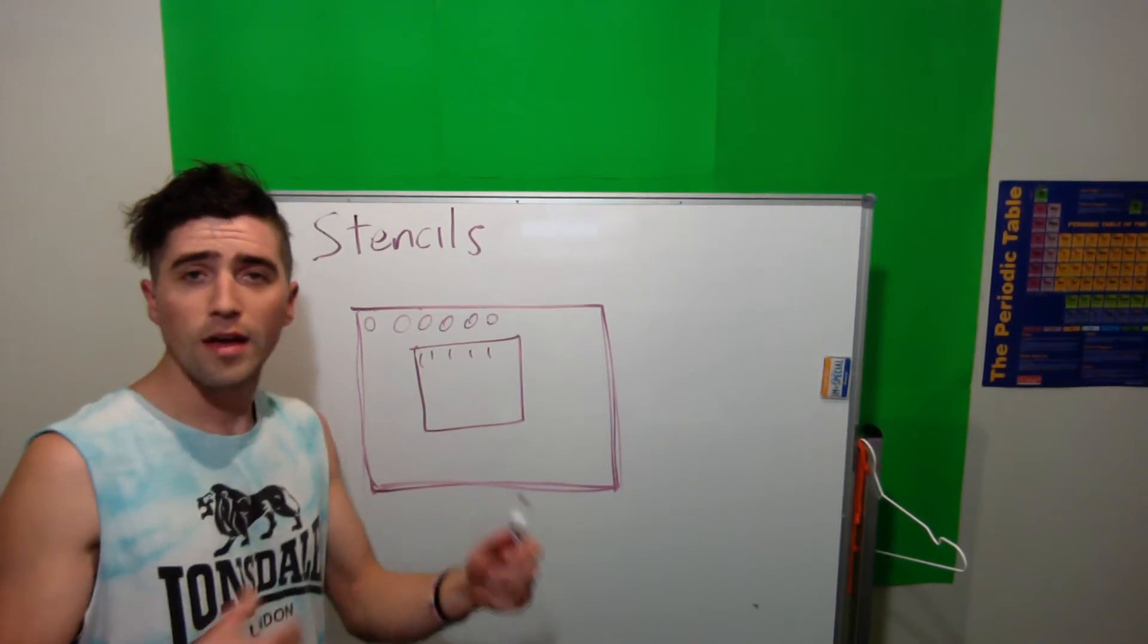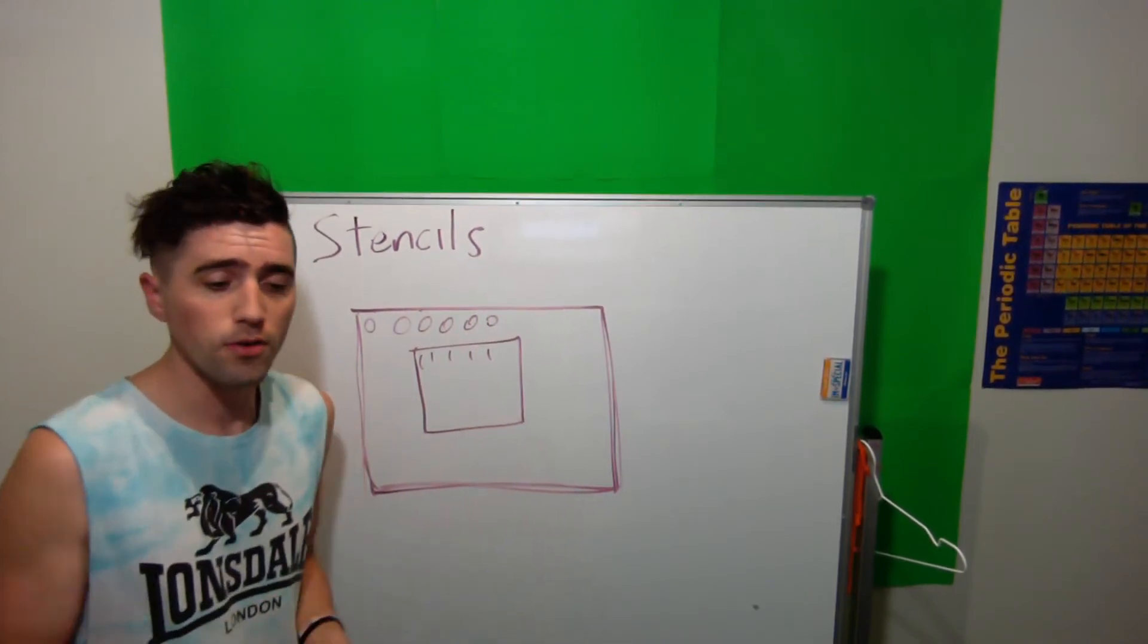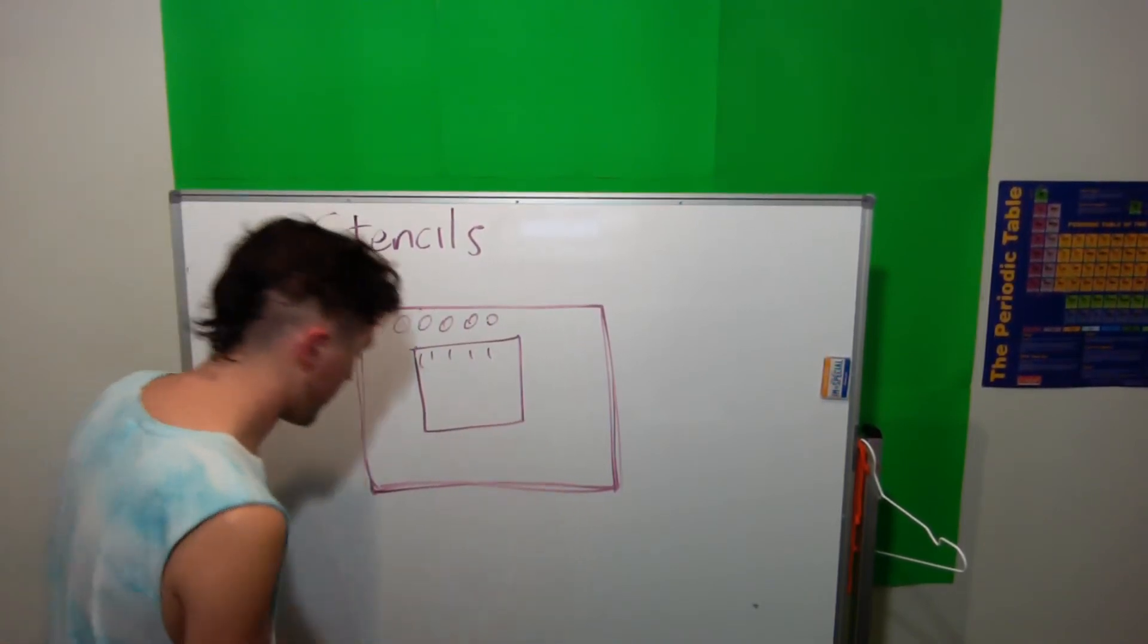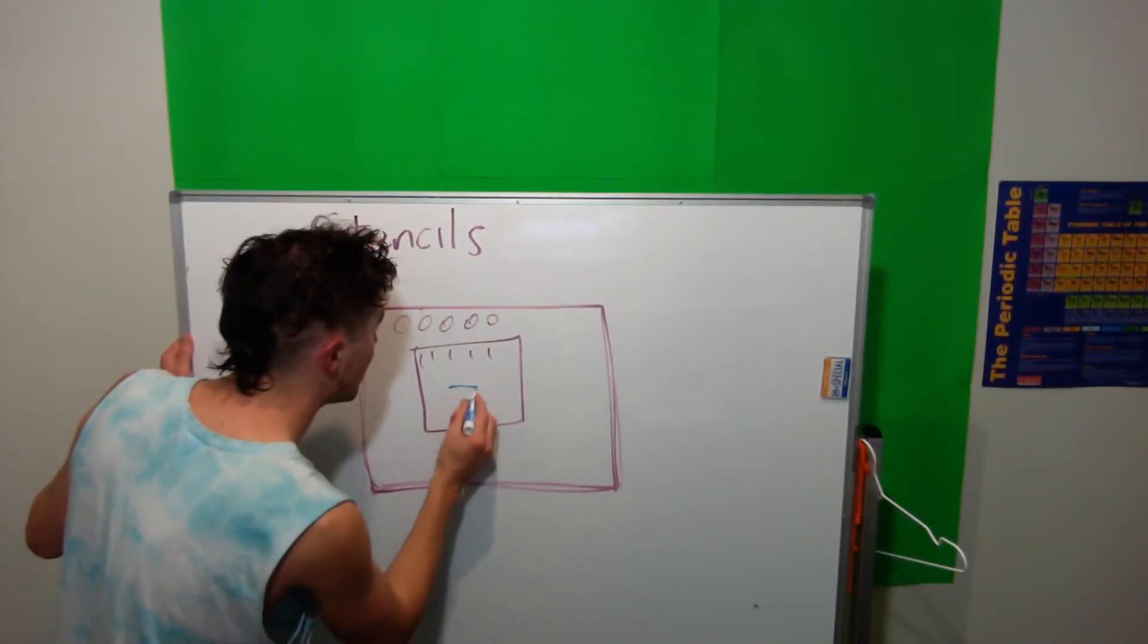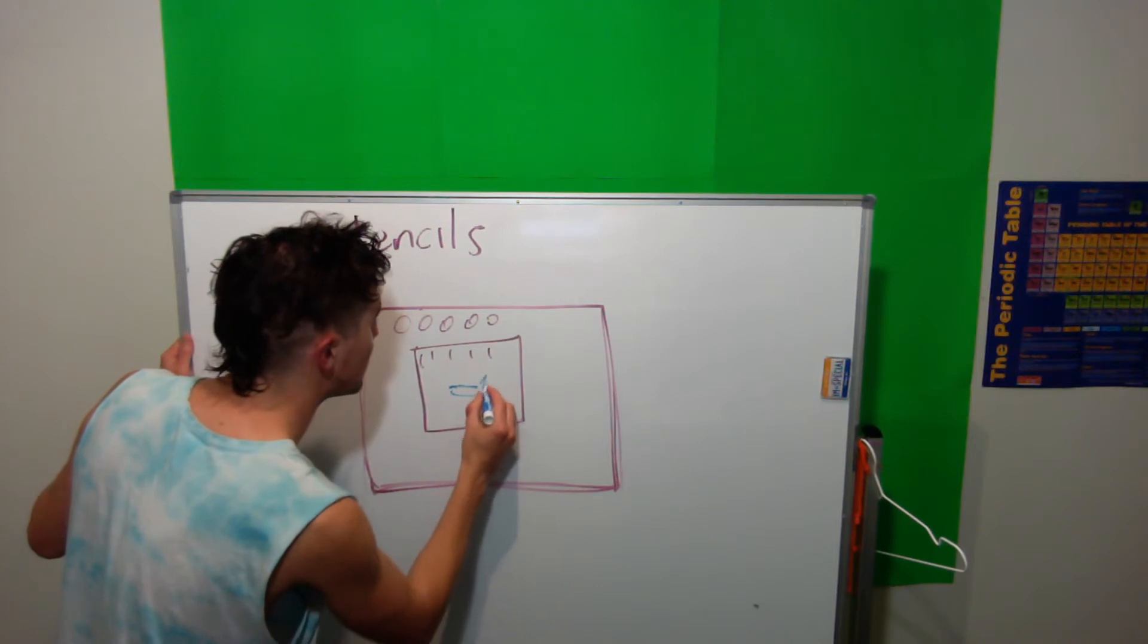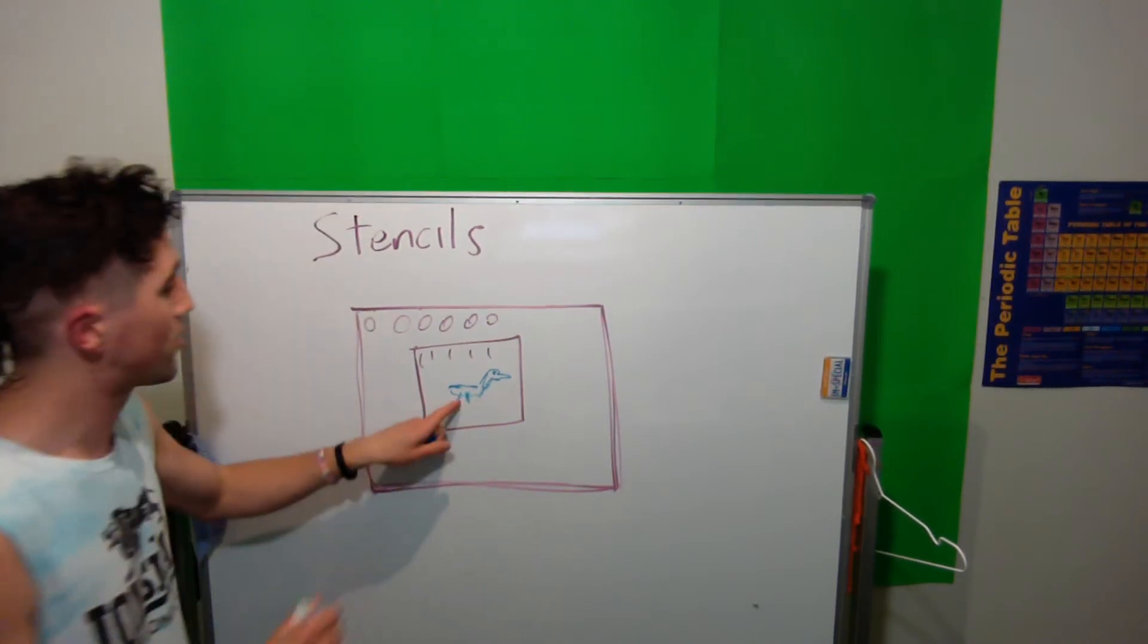And then we can say, for every object inside this other world, we want to say, for like, let's say, for example, we've got a little duck. I don't know. Looks like that, maybe. A little head. You can tell. Yeah. Beautiful. That's exactly what a duck looks like.